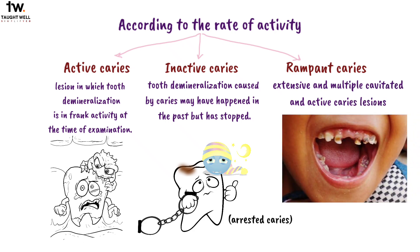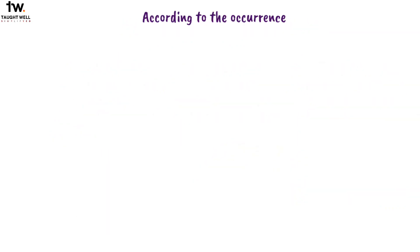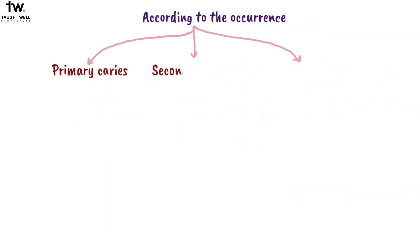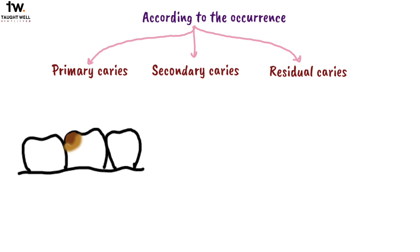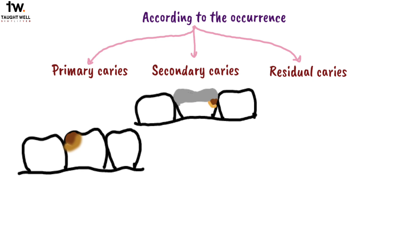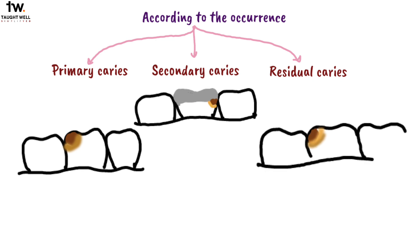According to occurrence, caries could be primary, secondary, or residual. Primary caries means the lesion is not adjacent to an existing restoration or crown. Secondary caries means the lesion is adjacent to an existing restoration, crown, or sealant. Residual caries refers to caries tissue that was not completely excavated before placing a restoration.